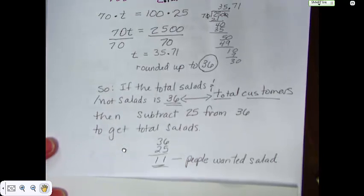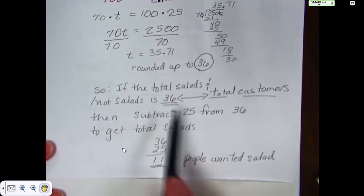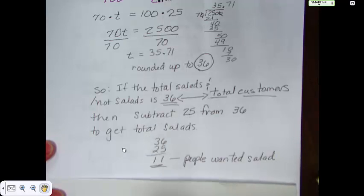And we would get the total number of people who ate salads as 11. Because we would subtract, take 36 minus 25, and we'd get 11.